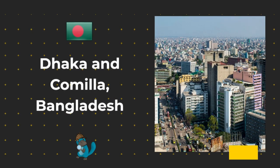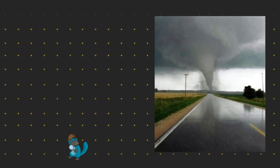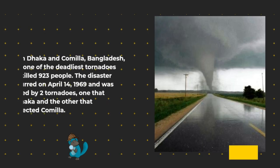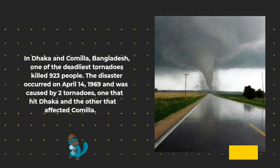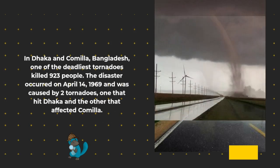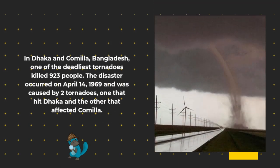In Dhaka and Kamila, Bangladesh, one of the deadliest tornadoes killed 923 people. The disaster occurred on April 14, 1969 and was caused by two tornadoes — one that hit Dhaka and the other that affected Kamila.